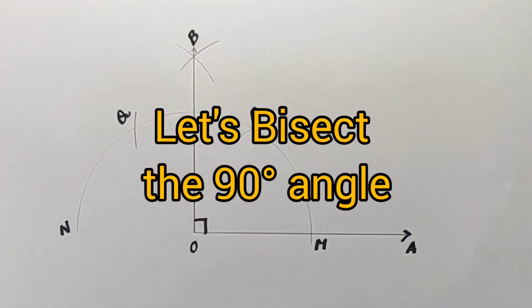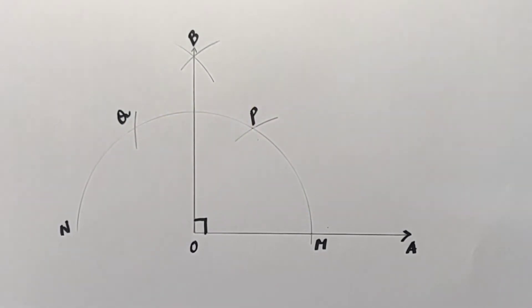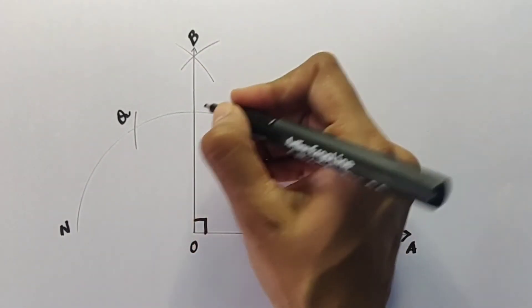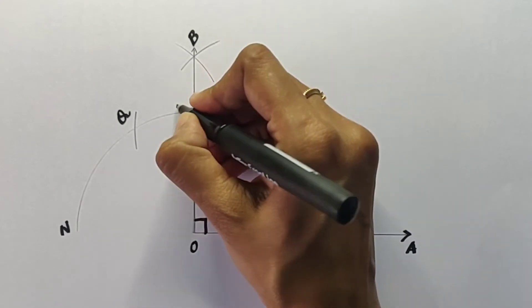Now that we have learned how to construct a 90 degree angle, let's learn how to bisect it as well. The point at which the line intersects the arc, let's label this point as M'.